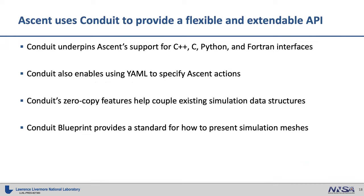Ascent uses Conduit to build out its API. Conduit is how we can do C, C++, Python, and Fortran interfaces in Ascent. It also enables YAML—Conduit parses the YAML. This allows zero copy of large arrays, which is very important for lowering memory overhead. The blueprint for providing meshes gives us a standard for expecting the different data fields and learning how to parse them.